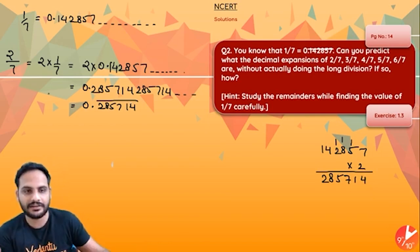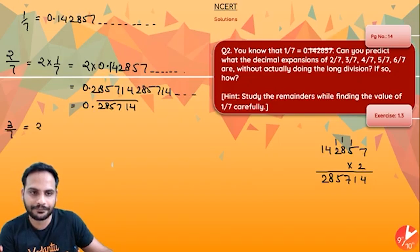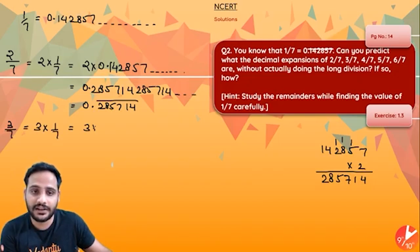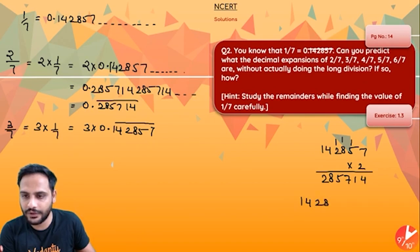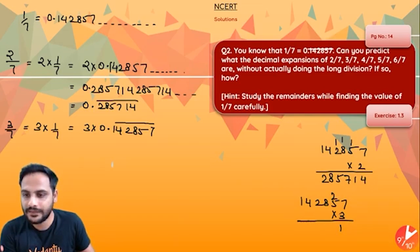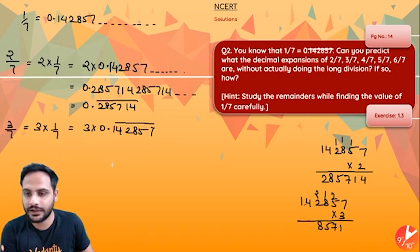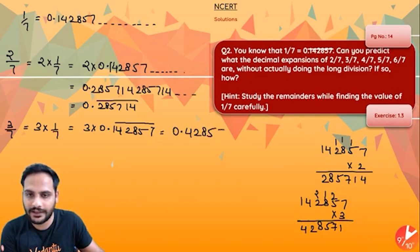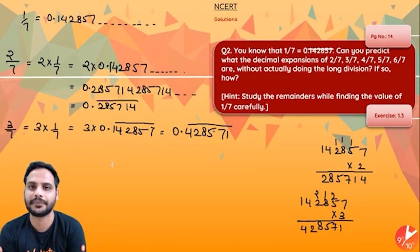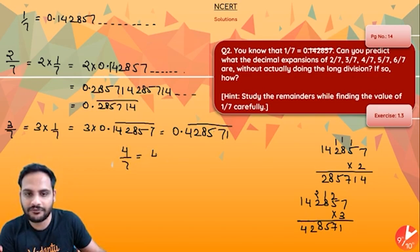Similarly, 3/7 will be 3 times of 1/7, which is 3 × 0.142857 repeating. Multiplying 142857 by 3: 3×7=21, carry 2; 3×5=15+2=17, carry 1; 3×8=24+1=25, carry 2; 3×2=6+2=8; 3×4=12, carry 1; 3×1=3+1=4. So 3/7 = 0.428571 bar.